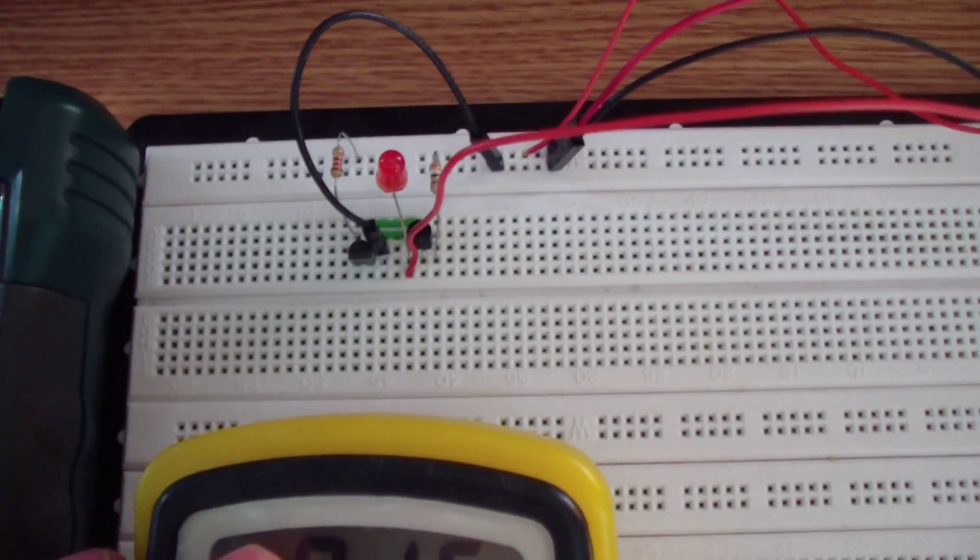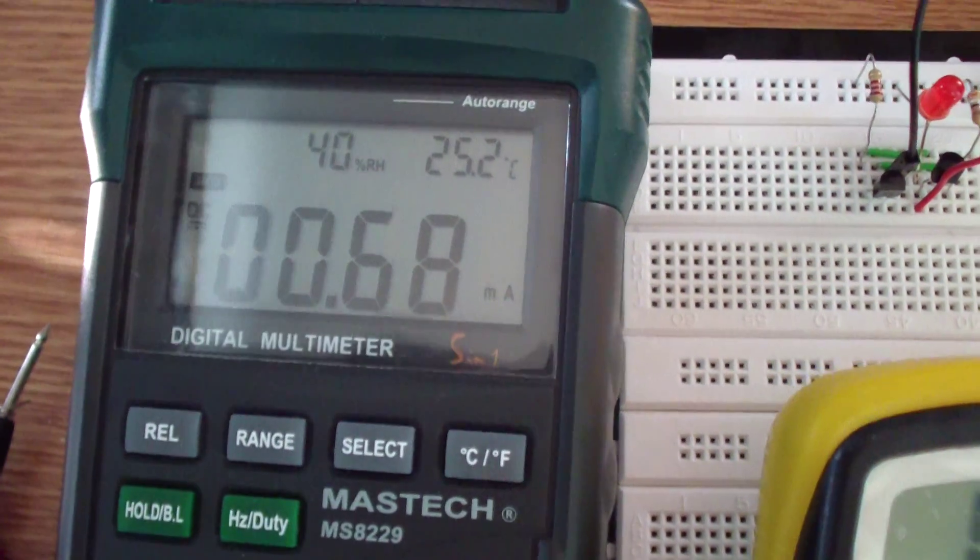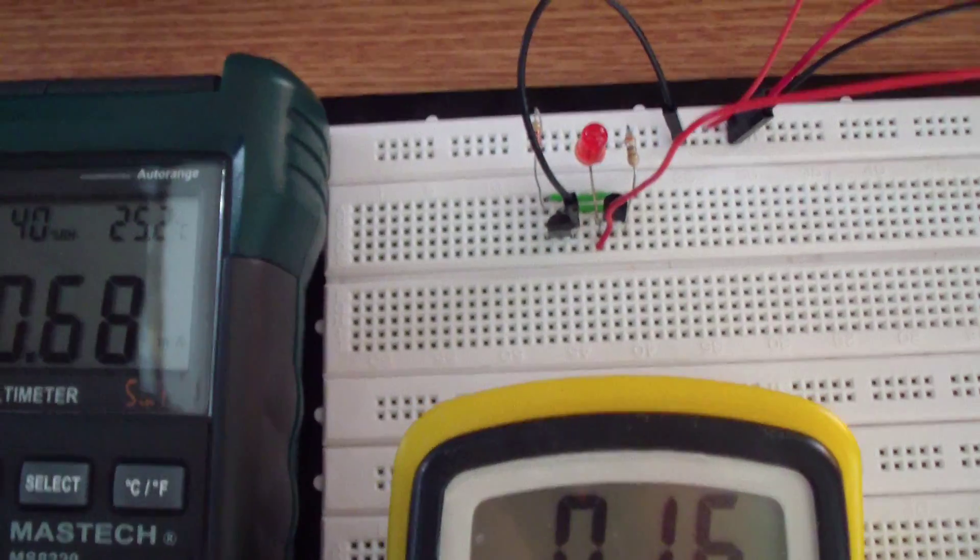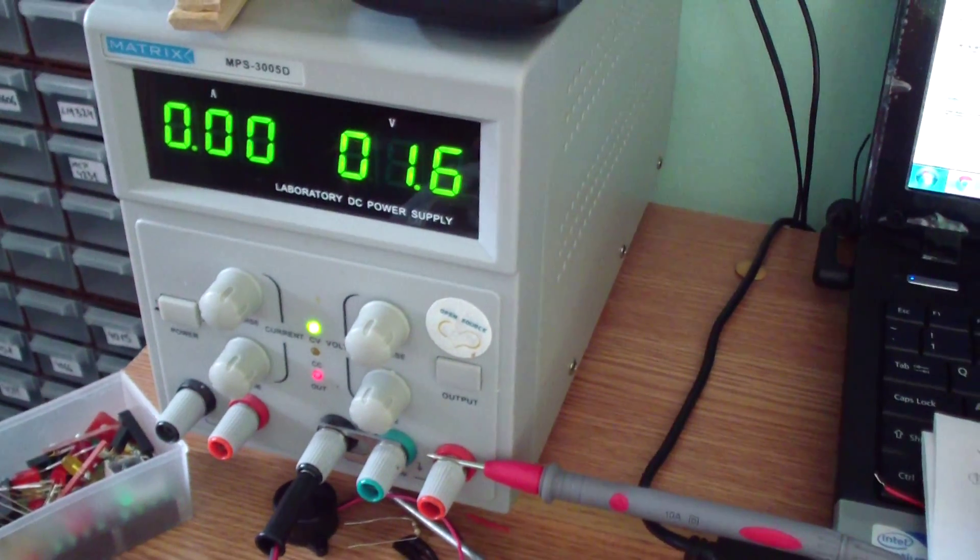You can see it stays around 2 volts. Here in this multimeter I am measuring the current consumption of the whole circuit, and on this power supply I am adjusting the voltage.